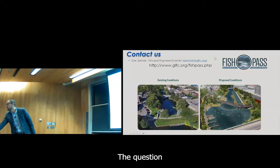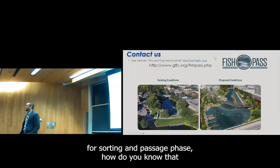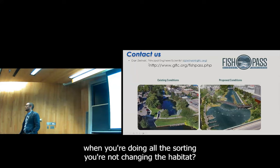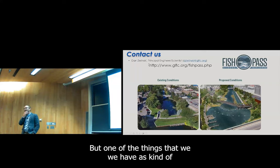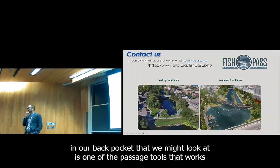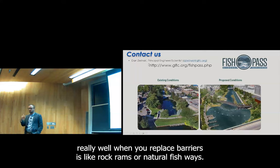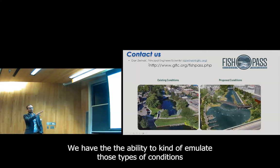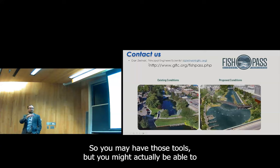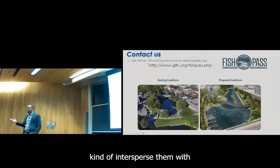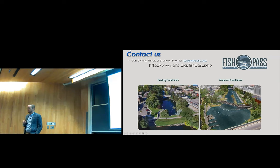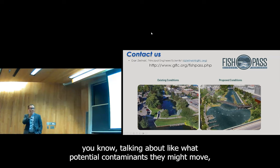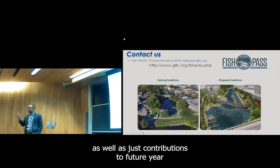Great presentation. Question: for the sorting and passage phase, how do you know that when you're doing all this sorting, you're not changing the habitat? Within the Fish Sorting Channel, it is an engineered habitat. But one of the things we might look at is that passage tools that work really well when you replace barriers — like rock ramps or natural fishways — we have the ability to emulate those types of conditions within the Fish Sorting Channel. You might actually intersperse them with improved habitat features. And as we provide increased passage to fish, those fish might also contribute changes to habitat both up and downstream, which is one of the things we look at in the assessment phase — potential contaminants they might move as well as contributions to future year classes.